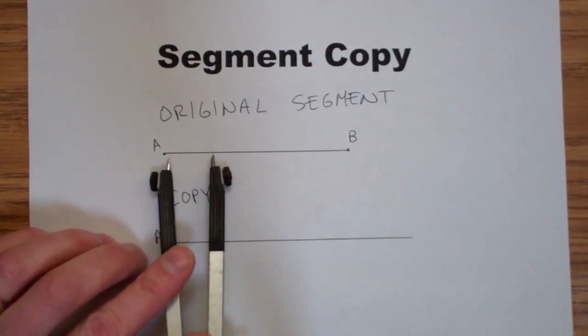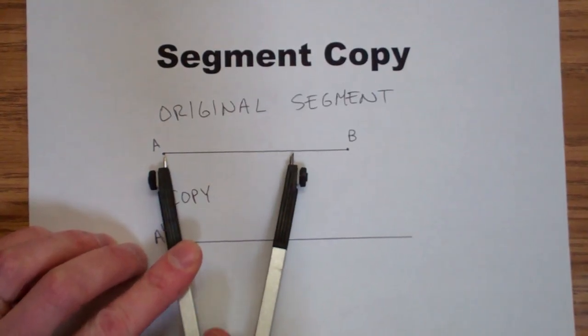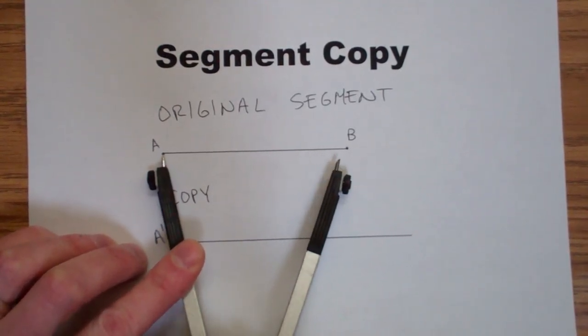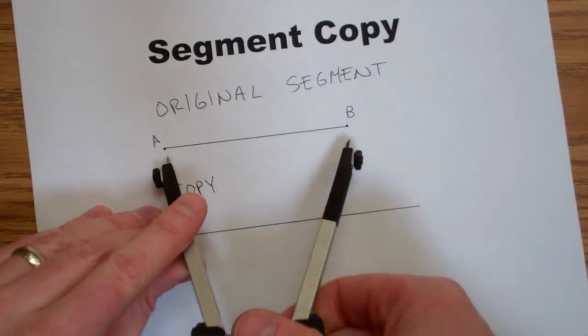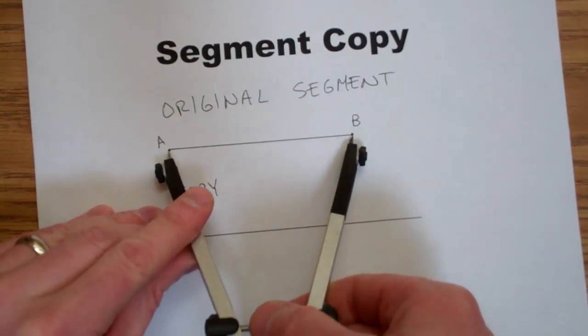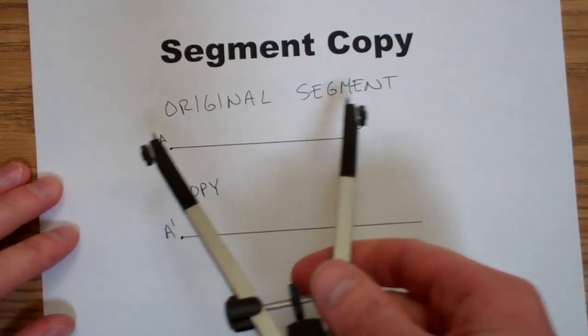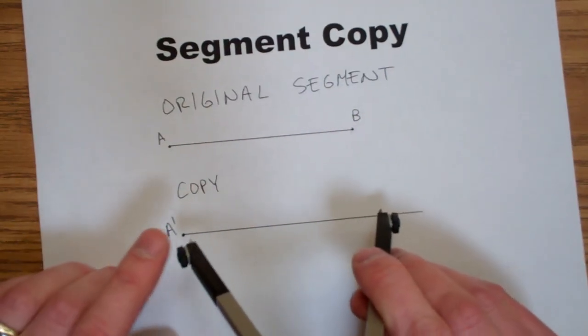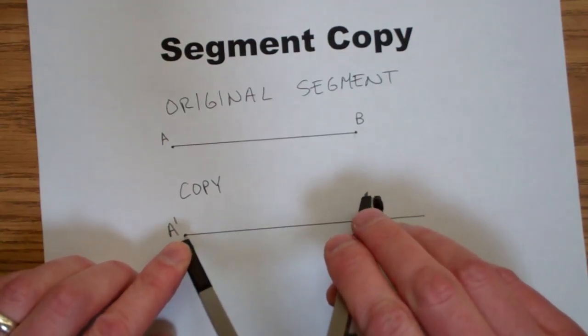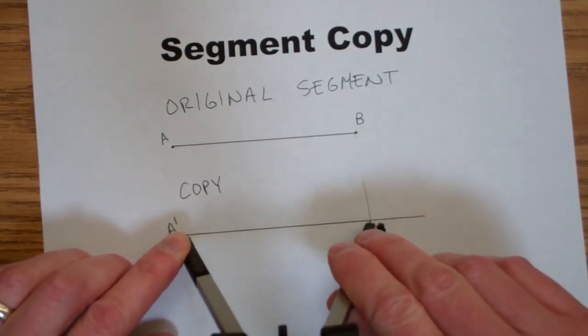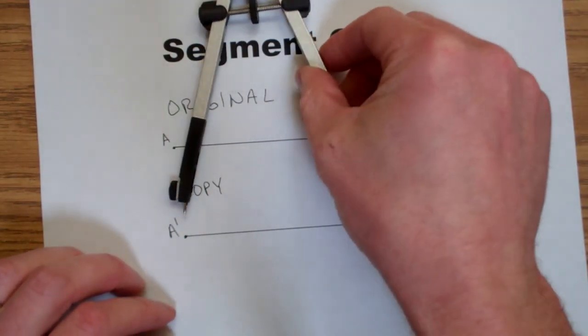Then we'll use our compass to measure the distance between segment points A and B. And we'll transfer that distance down to the copy, stabbing our point into A prime and making an arc that passes through the copy.